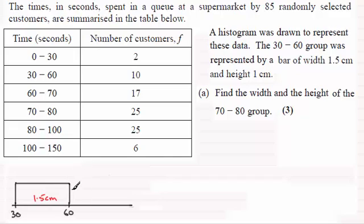And we've got then that the height here is 1 centimetre. Now what we know is that the class width here is 30 units, the difference between 60 and 30.